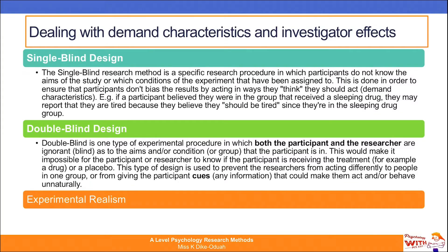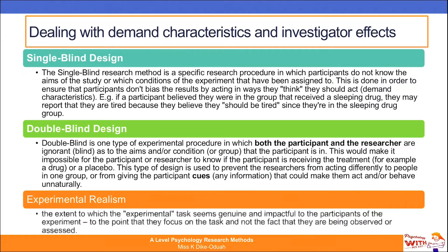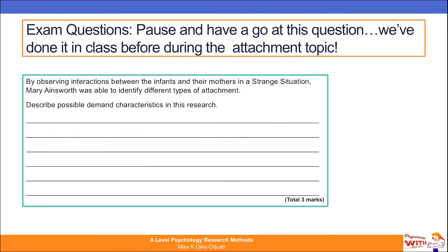Finally, experimental realism — this is the extent to which the experimental task seems genuine and impactful to participants, to the point that they focus on the task and not the fact that they are being observed or assessed. If you give a participant a task that is not meaningful, seems out of place, or seems unrealistic, they're more inclined to try and work out the aims of your study. Whereas if the task holds good experimental realism, they're less inclined to focus on being part of an experiment, which minimises demand characteristics.